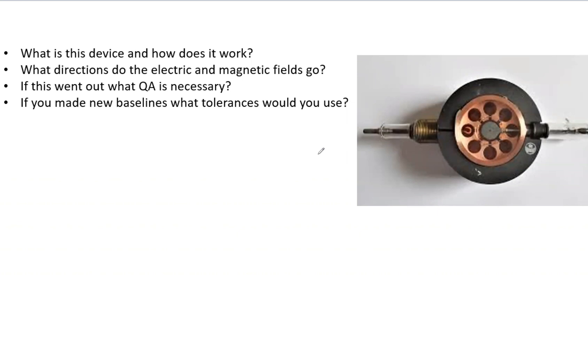Okay, we're going to cover a very important question for your LINAC understanding for radiation beams and the Part 3 exam. Say you see a device that looks like this. What is this and how does it work? What directions do the electric and magnetic fields go? If this went out, what QA is necessary?